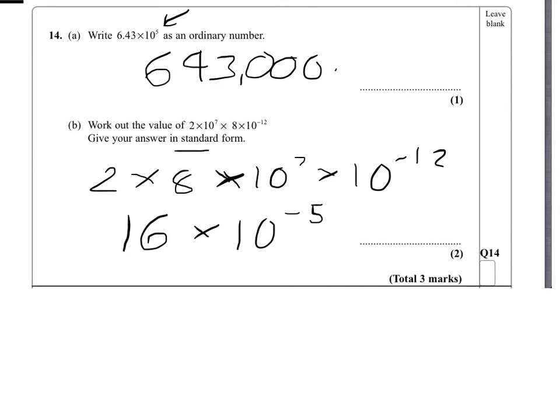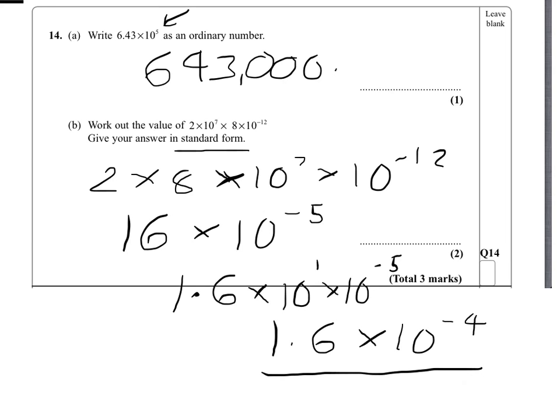Now it would be wrong to leave it, because it's not yet in standard form. We'll write the first number between 1 and 10. So that would be 16, which would be 1.6 times 10 times, and we'll bring in the 10 to the minus 5. So remember 10 is 10 to the 1, so add those powers together, and we have 1 plus minus 5 is minus 4. So the answer in standard form is 1.6 times 10 to the minus 4.